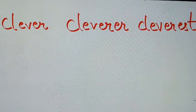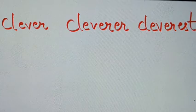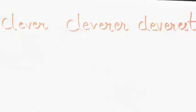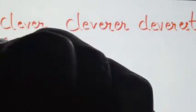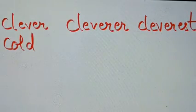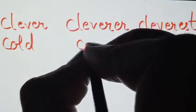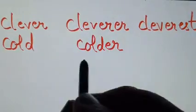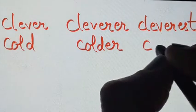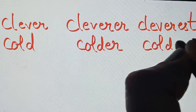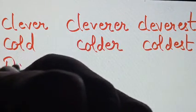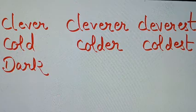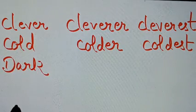Note down all these in your notebook by making a table. Next example: 'cold' — its comparative degree is 'colder' and superlative is 'coldest.' Next we have 'dark' — these are all positive degrees, simple adjectives. The comparative degree is used when we compare two people, many people, or even places.